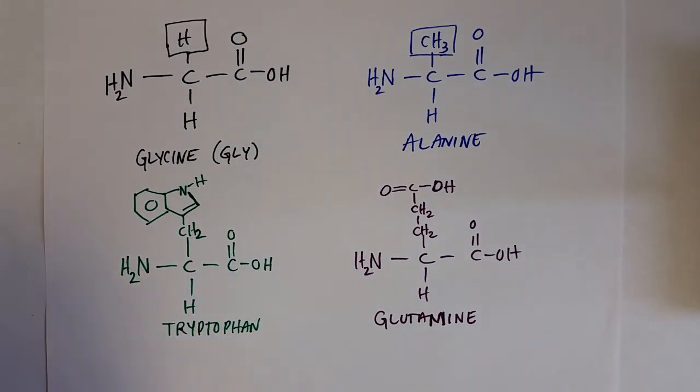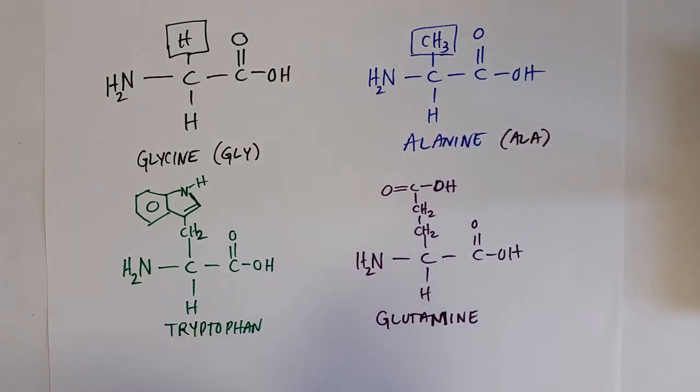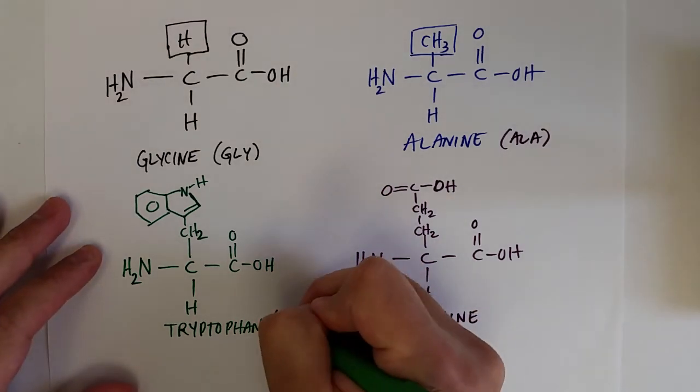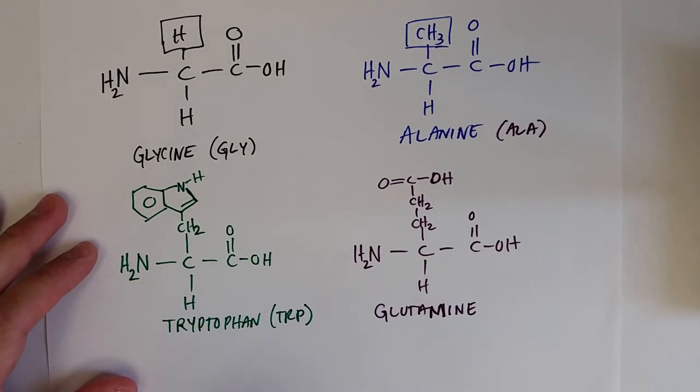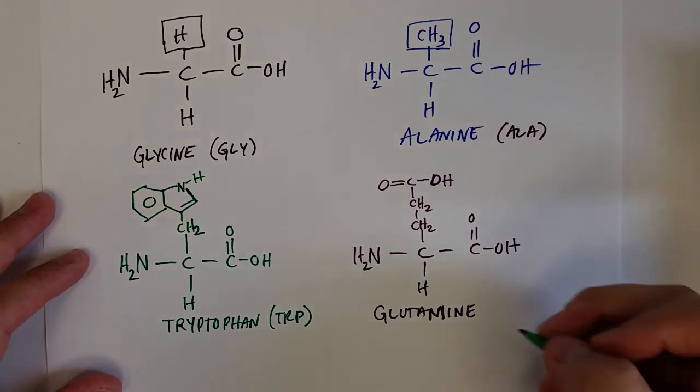Alanine's is ALA. Tryptophan's is TRP. And glutamine's is GLN.